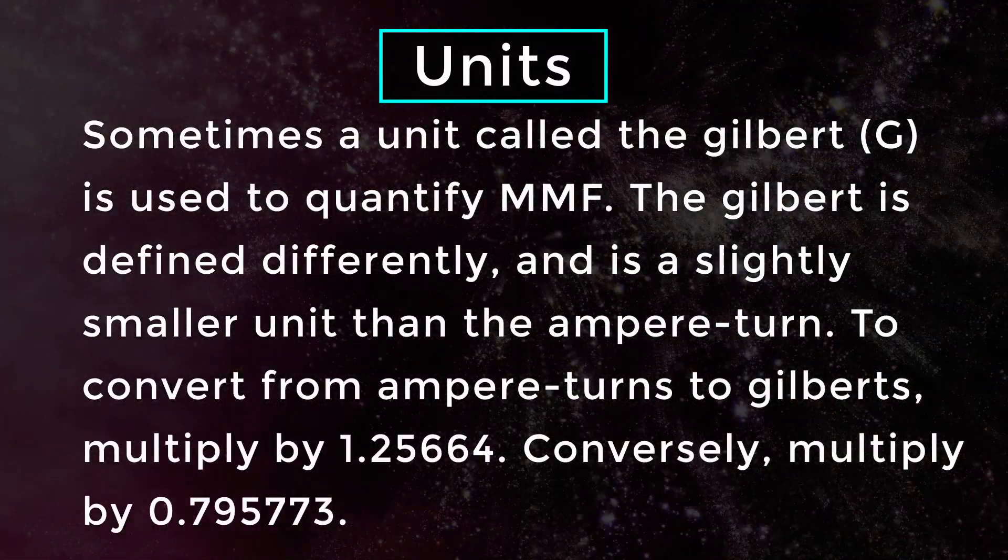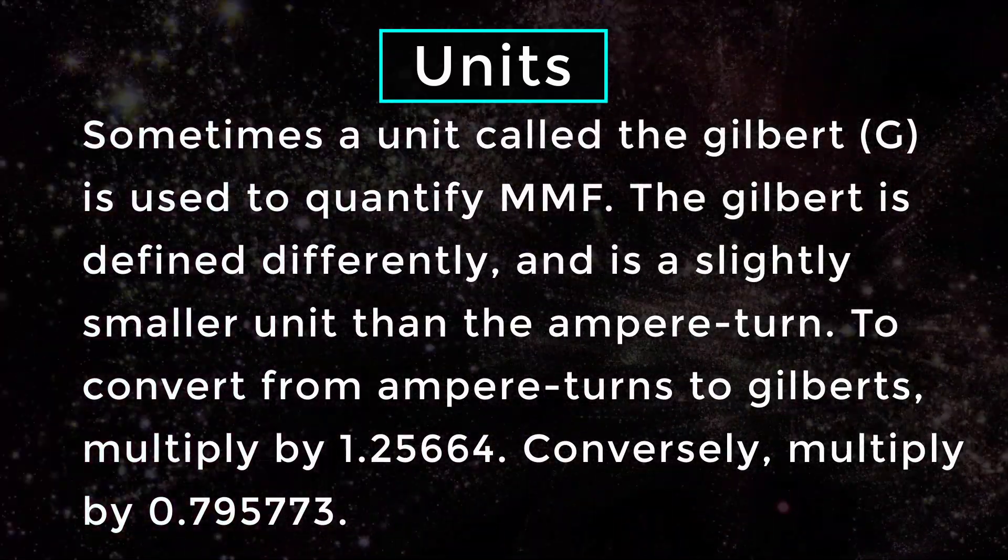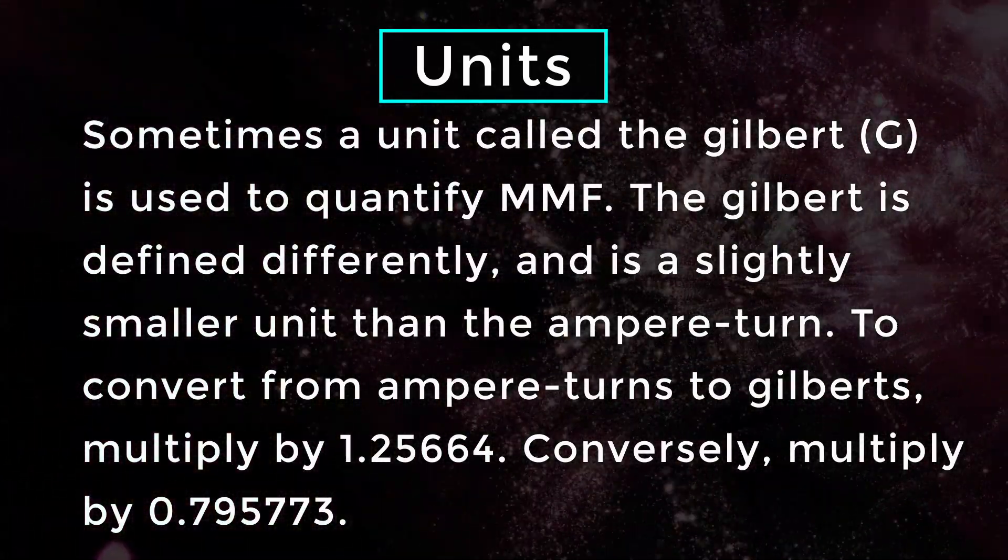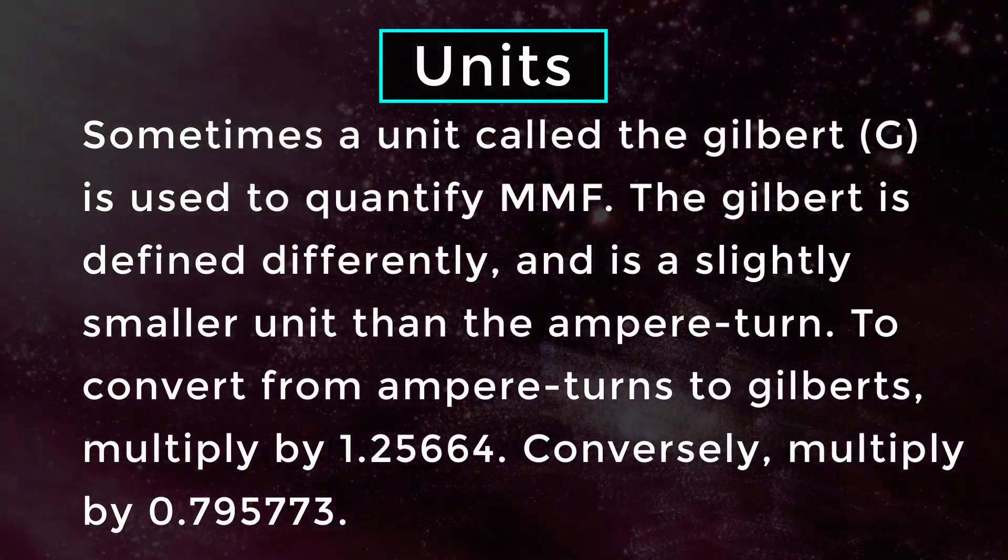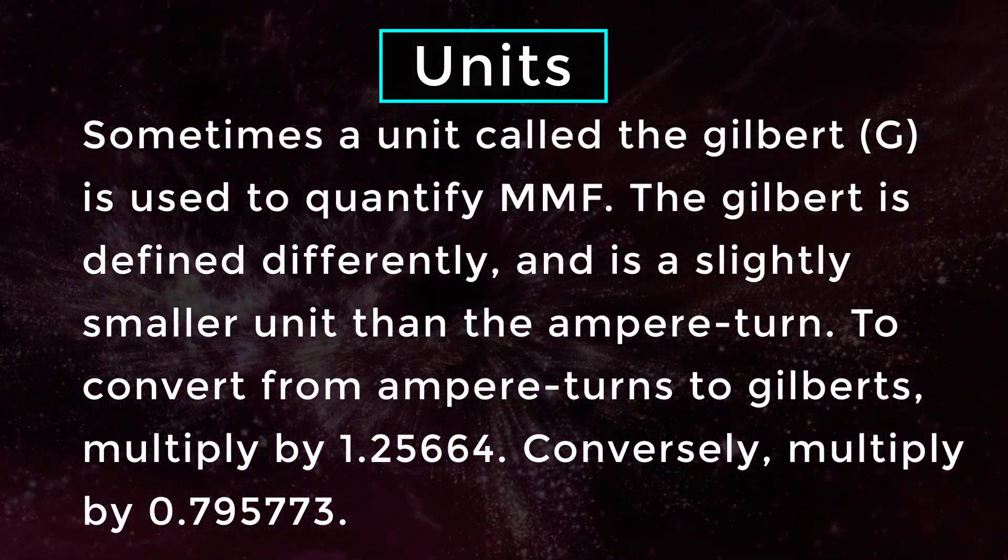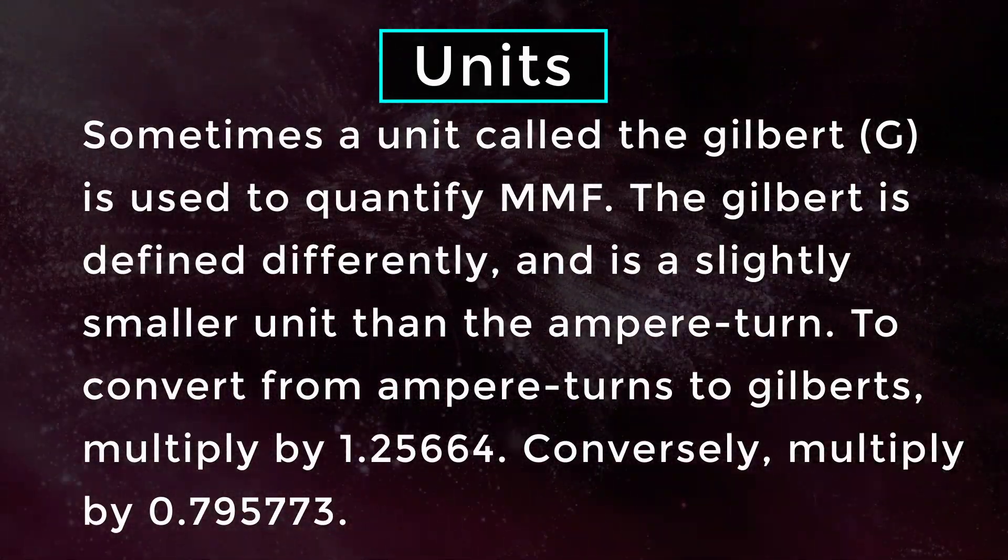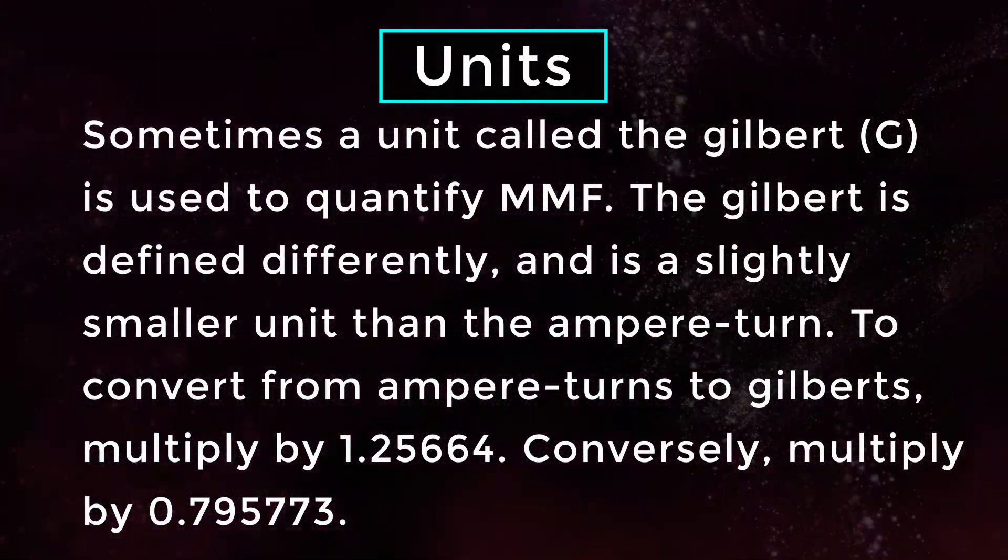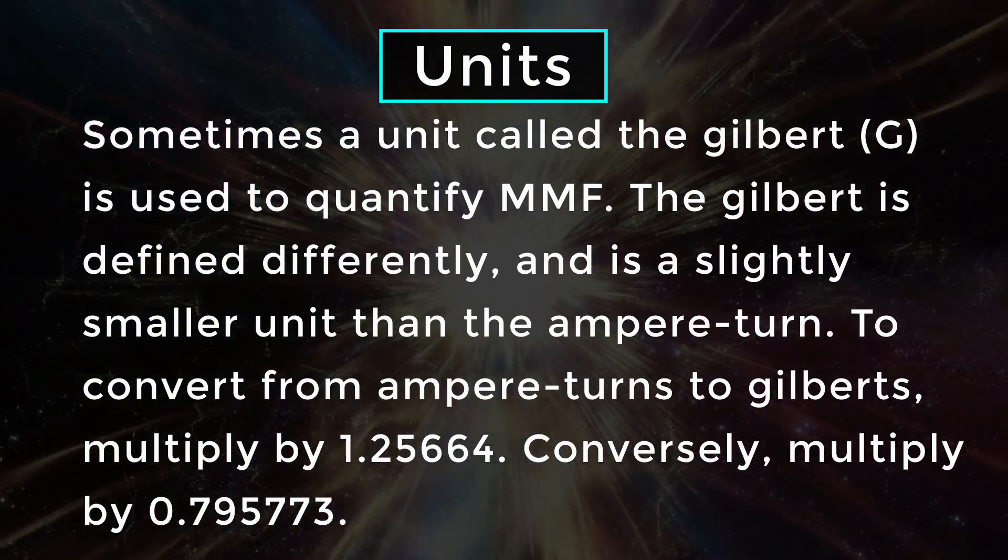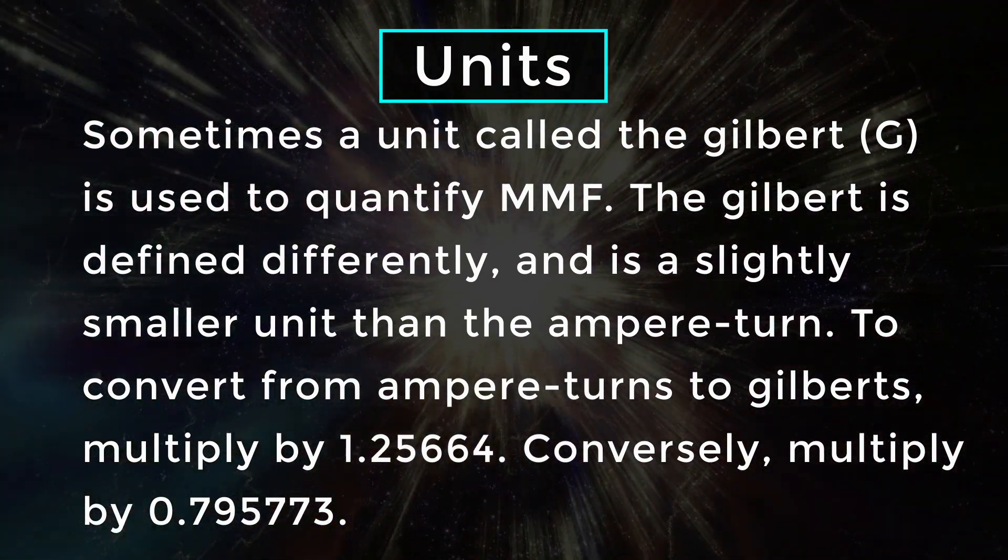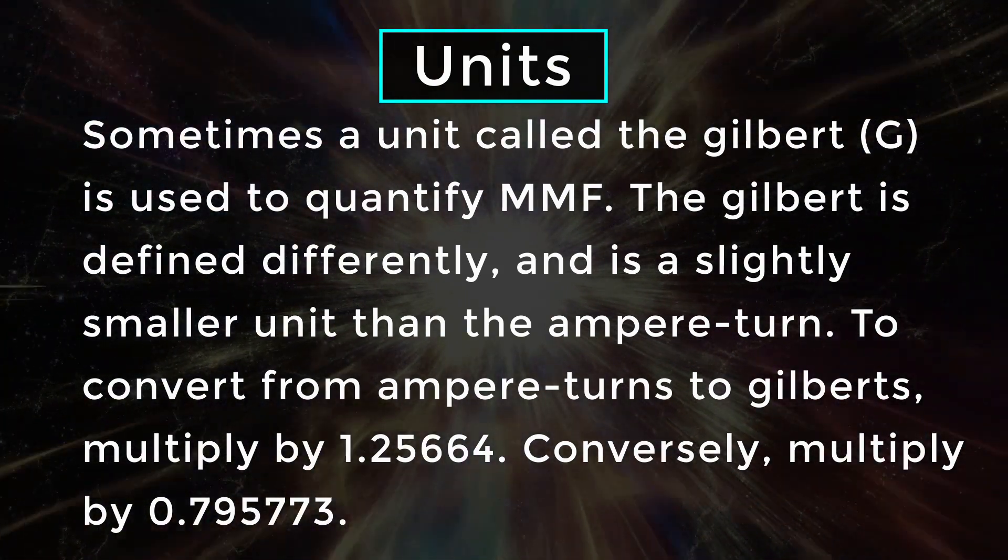Sometimes a unit called the gilbert G is used to quantify magnetomotive force. The gilbert is defined differently and is a slightly smaller unit than the ampere-turn. To convert from ampere-turns to gilberts, multiply by 1.25664, conversely multiply by 0.795773.